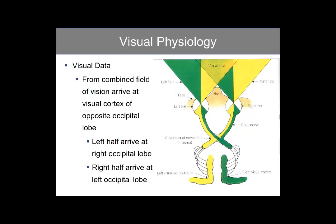Visual data from the combined fields of vision arrives at the visual cortex of the opposite occipital lobe. As this diagram demonstrates, the left half arrives at the right occipital lobe while the right half arrives at the left occipital lobe. Each optic nerve carries portions of the left and right visual fields before they end up at the visual cortex in the occipital lobe of the cerebrum.